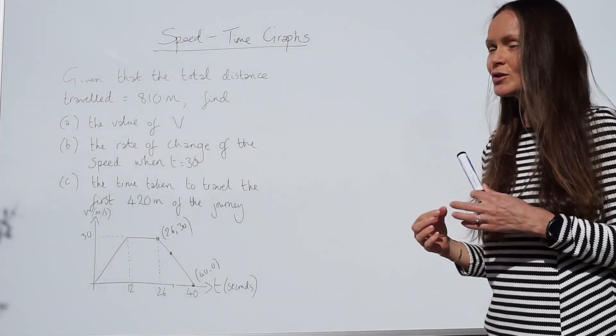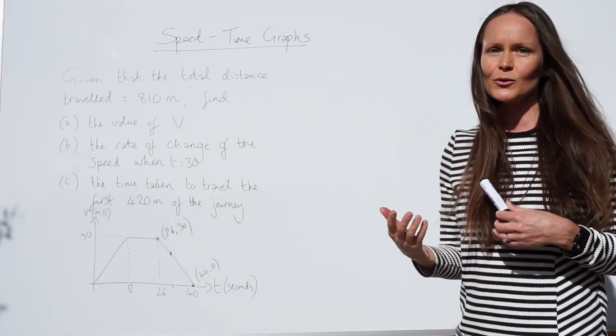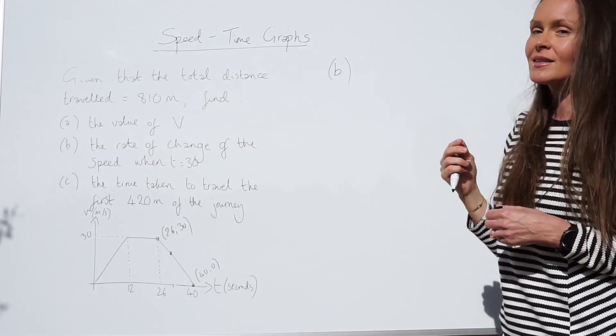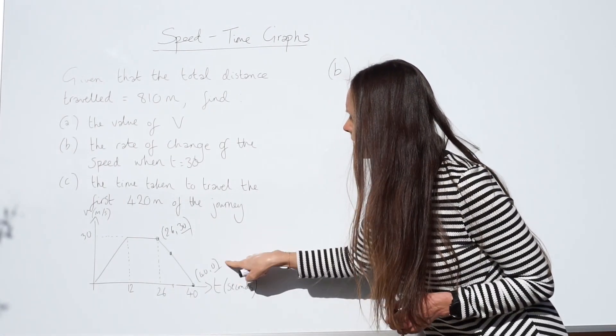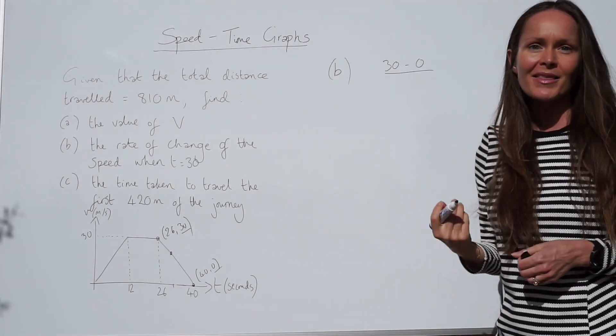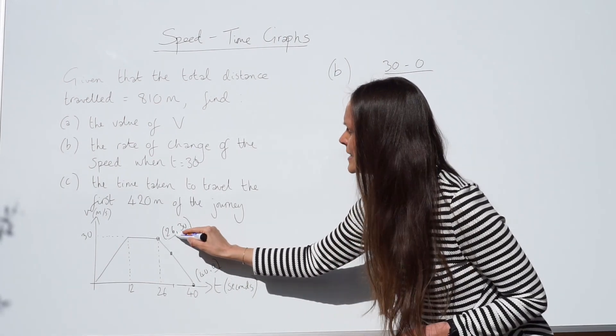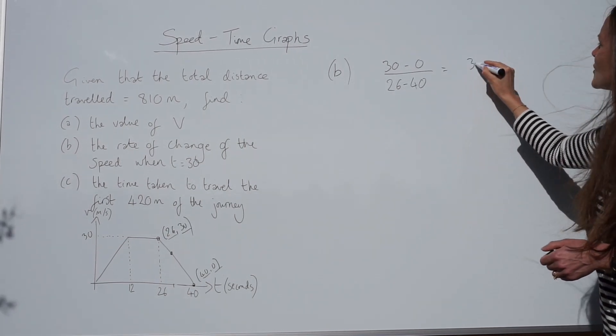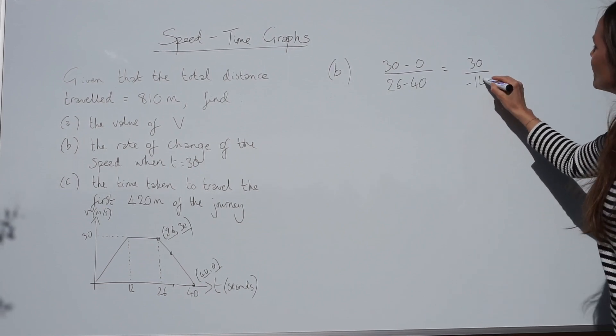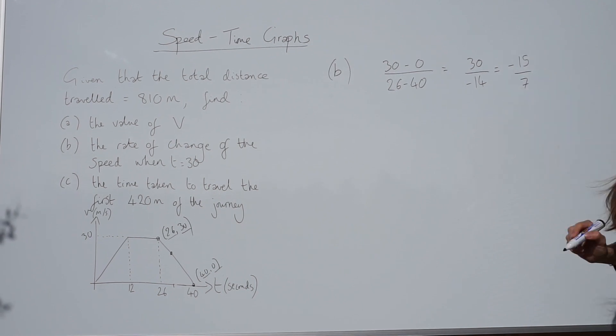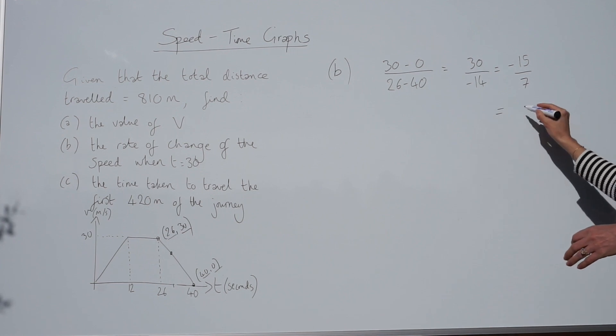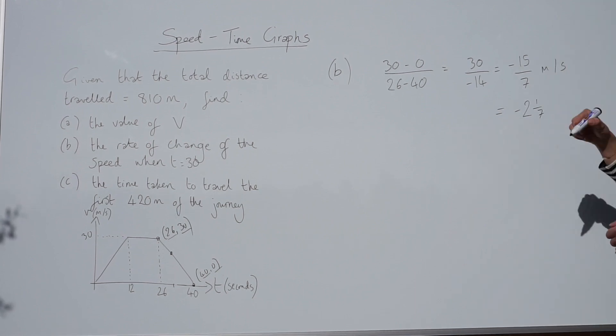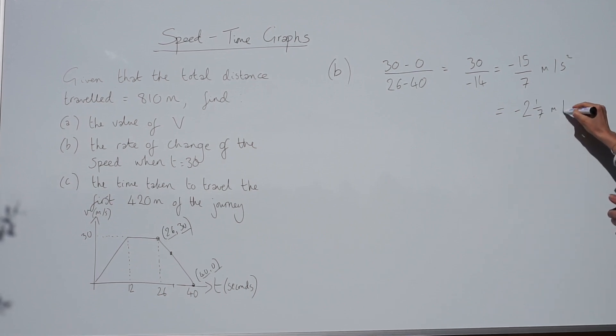This method I'm going to use to work out the gradient is called rise over run. If you're not familiar with finding gradients and using rise over run, please watch my other lesson on that first, and then this will seem a lot easier. So to work out the rise, we have to subtract the Y values. So I'm going to do 30 take away 0. Then I need to divide by the difference in the X values. So this time I'm going to do 26 take away 40. So if I calculate this, 30 take away 0 is just 30. 26 take away 40 is negative 14. And if I simplify that fraction, I get negative 15 over 7. Or if you write it as a mixed number, you get negative 2 and 1 seventh. They're both the same thing. They're both correct. And the units for rate of change of the speed or acceleration, they are metres per second squared.